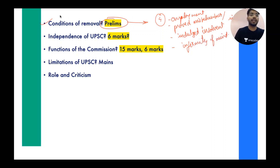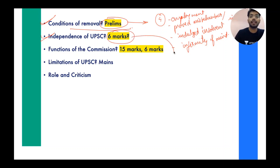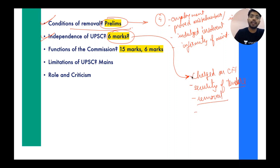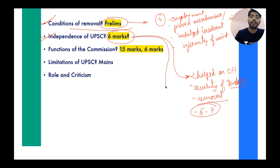The independence of UPSC can also be a six-mark question — how the Union Public Service Commission maintains its independence and functions while retaining that independence. As you know, their salary is charged on the Consolidated Fund of India. Then there is security of tenure, which itself provides independence. The removal process is modeled on that of a Supreme Court judge. In Laxmikant, you will find almost six to seven points describing security of tenure and independence of UPSC.